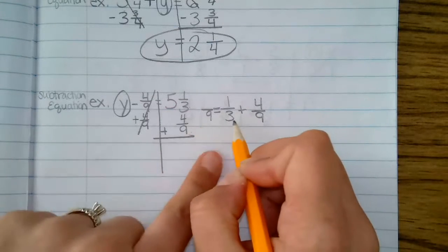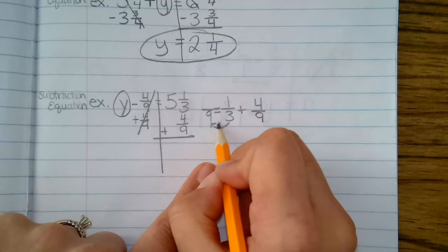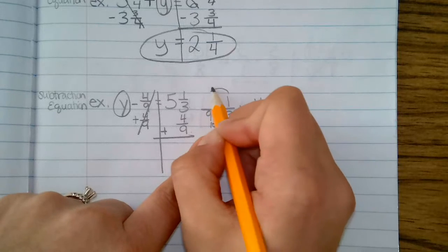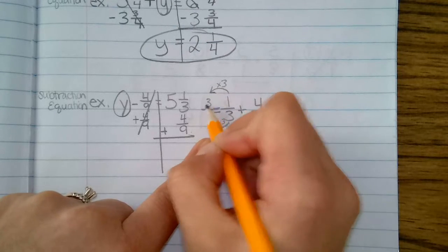So this is review. Three times what will give me nine? I know three times three is nine, and anything I do to the bottom, I must do to the top. So I multiply one times three. So I have three ninths.